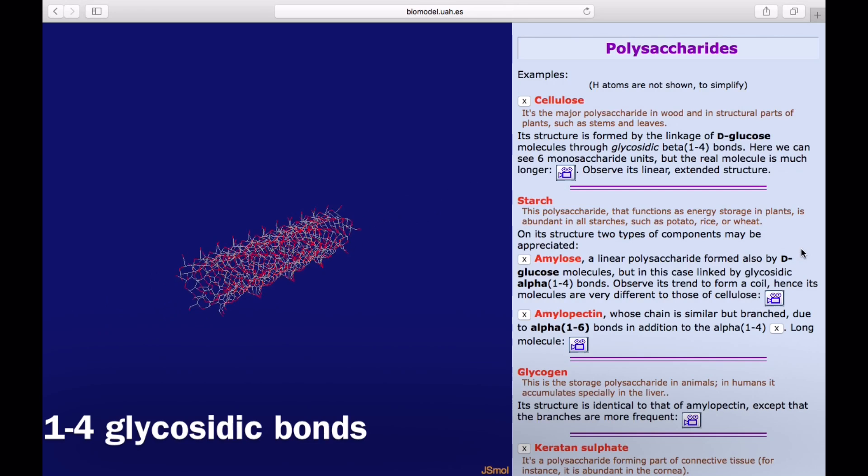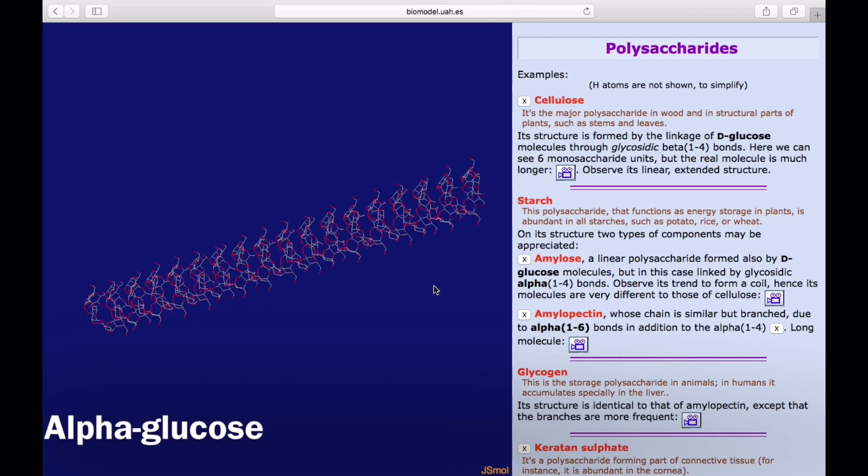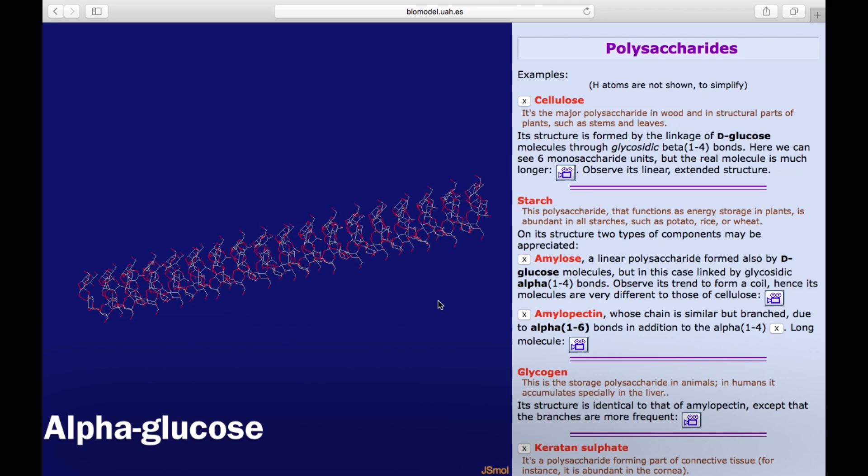1-4 glycosidic bonds are found in amylose. However, unlike cellulose, these bonds are found between alpha-glucose molecules as opposed to the beta-glucose molecules in cellulose.